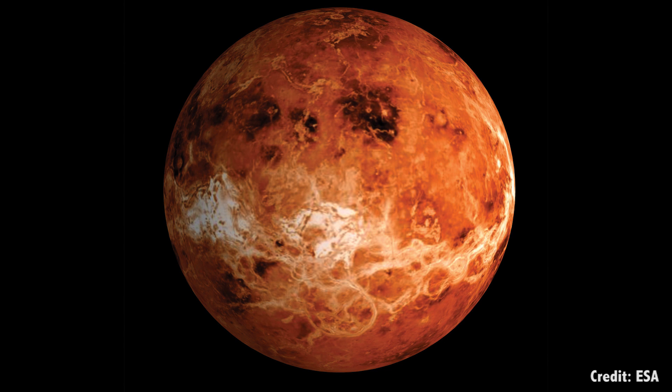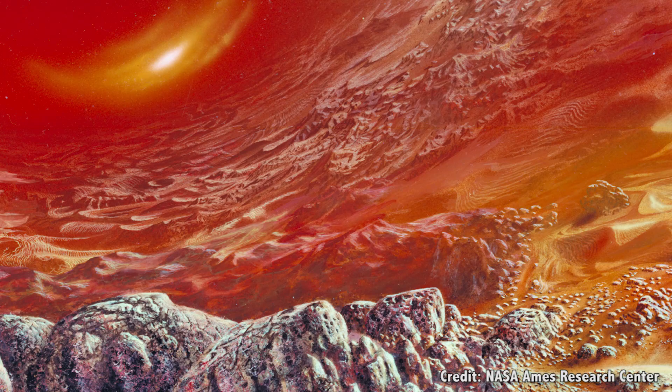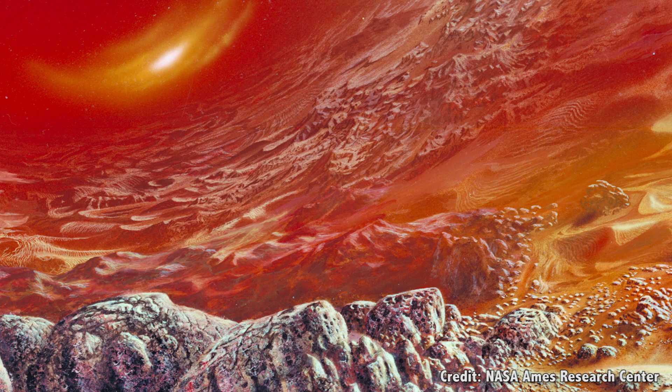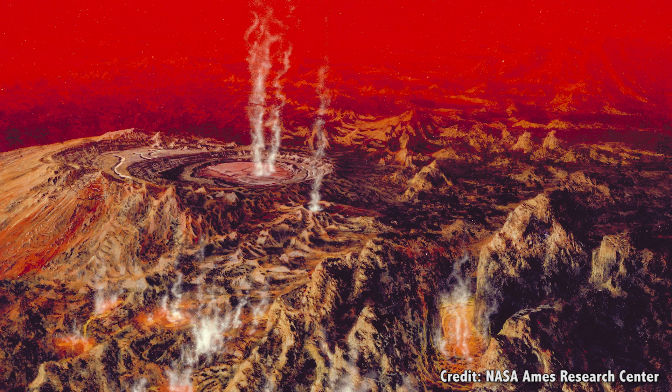We've done several videos on what the planet Venus actually is, and why it sucks so much. You know, a runaway greenhouse effect giving the planet 90 times the Earth's atmospheric pressure at the surface. It's a 462-degree furnace anywhere you go, with a rain of sulfuric acid.